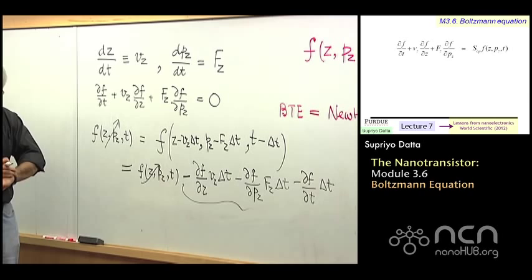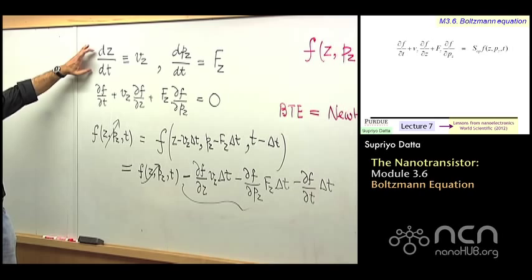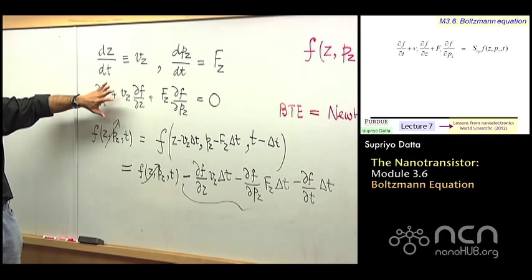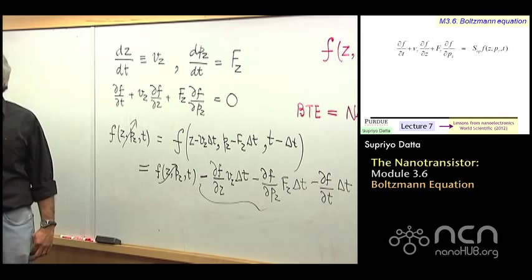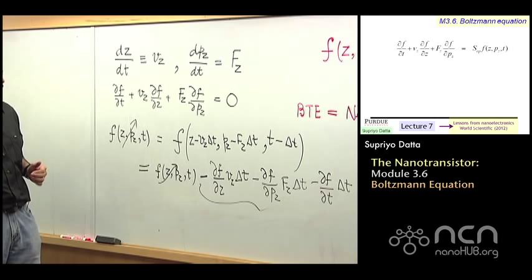And this is actually the left-hand side of the Boltzmann transport equation. So, all I have done really then is, you see, what was Newton's law, I have translated it into a different language sort of. And it is really quite different because here, the independent variable is time. Z and pz are dependent variables that evolve with time.